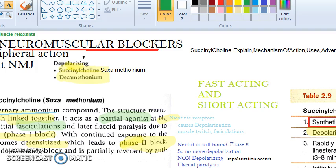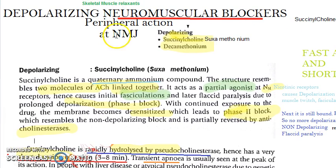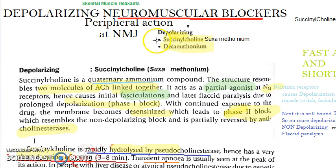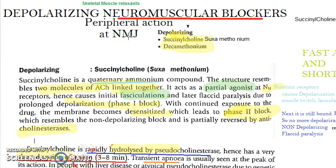Succinylcholine is a peripherally acting skeletal muscle relaxant that acts on the neuromuscular junction and is depolarizing. Its other name is suxamethonium. There is also decamethonium. In examinations, they usually ask about depolarizing neuromuscular blockers or succinylcholine. When asked about depolarizing neuromuscular blockers, remember there are two examples: succinylcholine and decamethonium, also called suxamethonium and decamethonium.